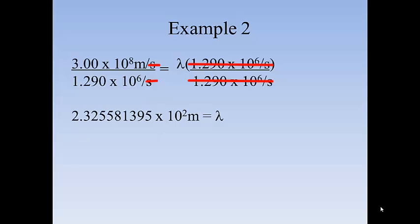Do the math out and you get this number. But remember, the 3.00 is 3 sig figs. The 1.290 is 4 sig figs. So the answer should have three significant figures. So it turns out to be 2.33 times 10 to the 2nd meters, which is the same as 233 meters, which is the wavelength. Or the distance between the crest of each of the waves from the radio tower is 2 and a third times the length of a football field.